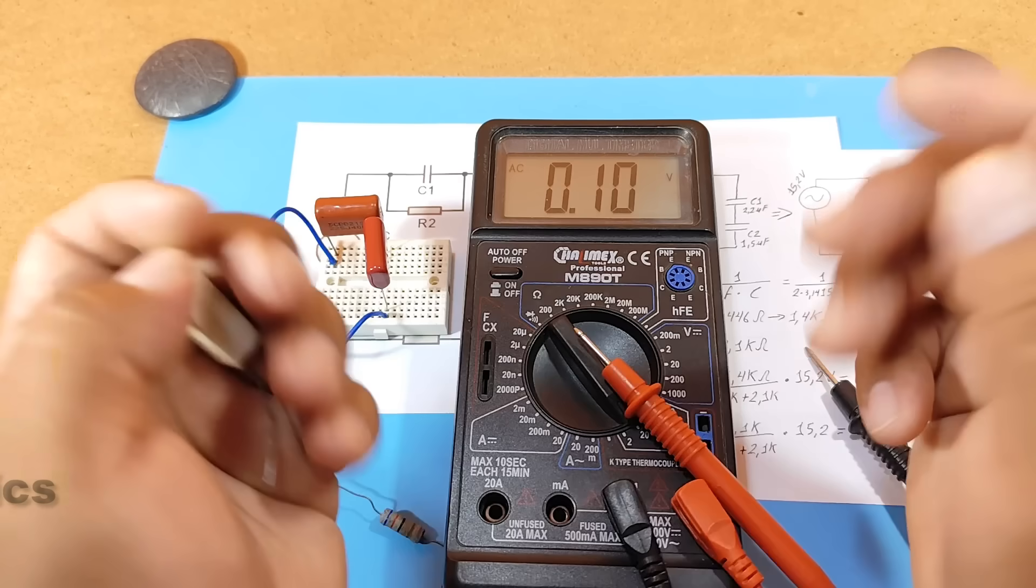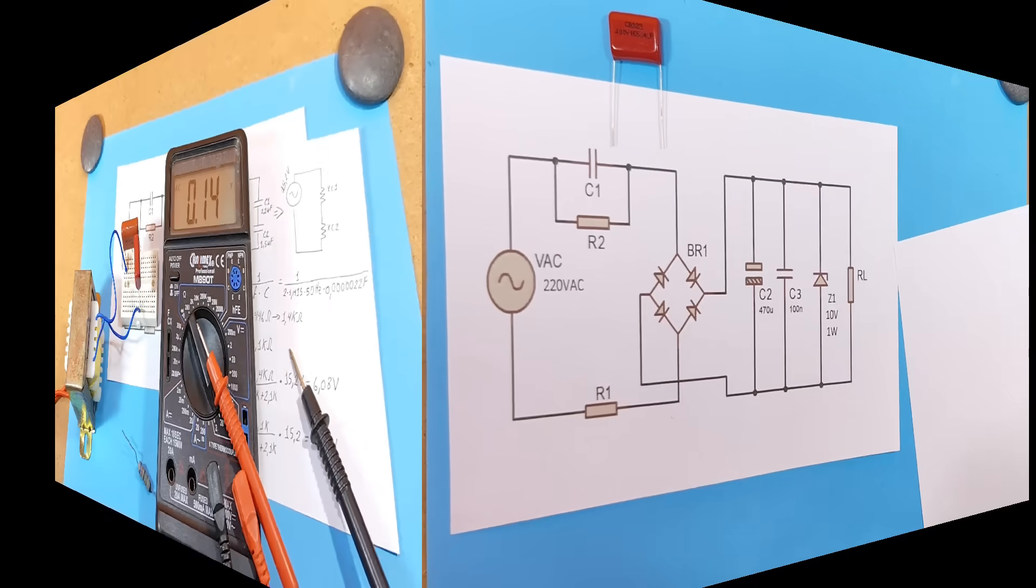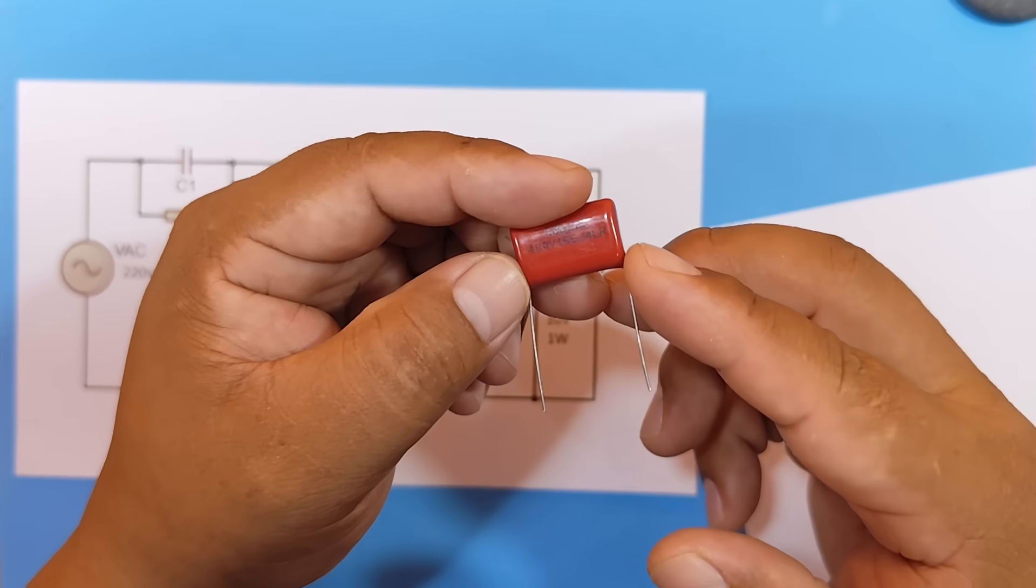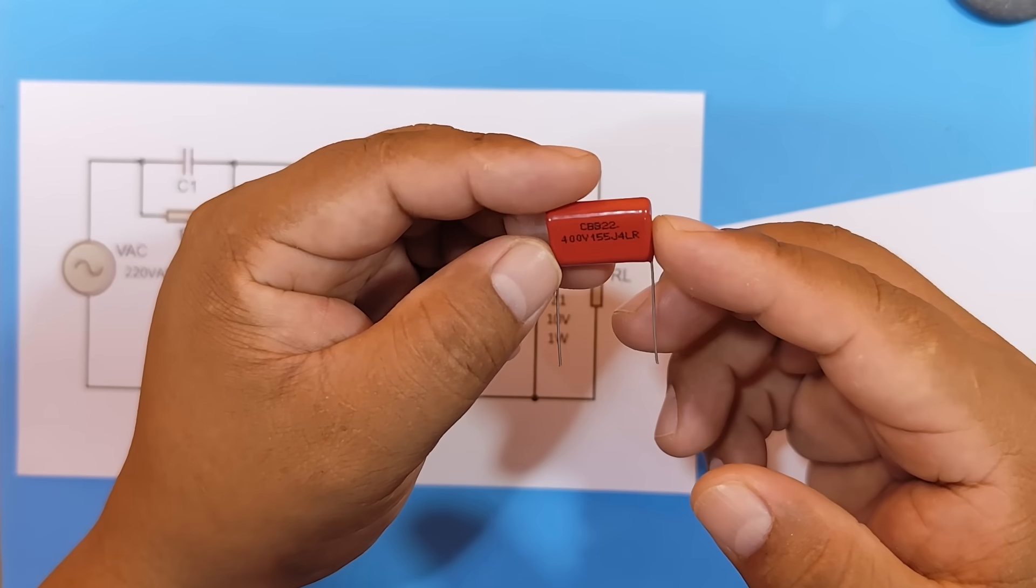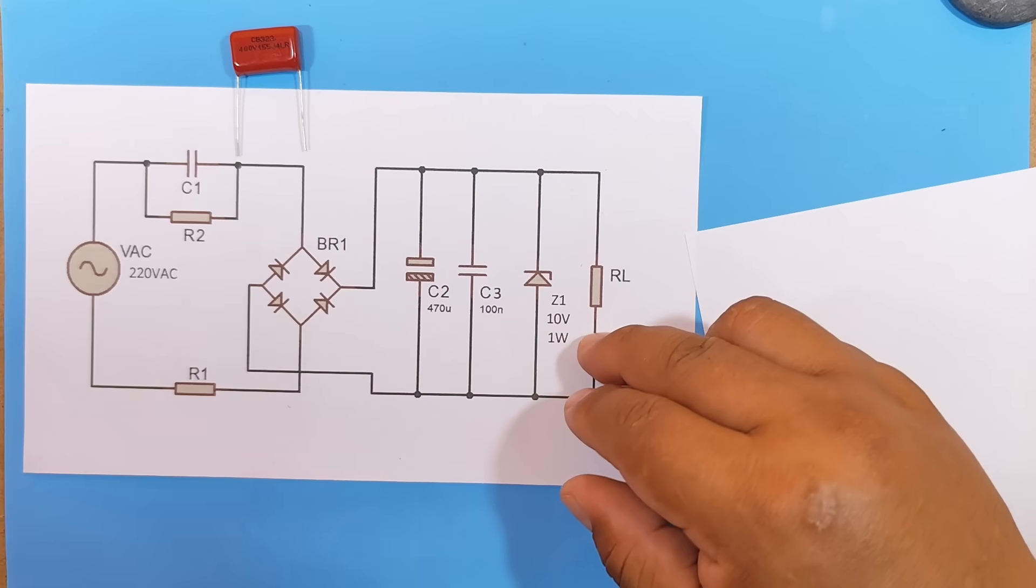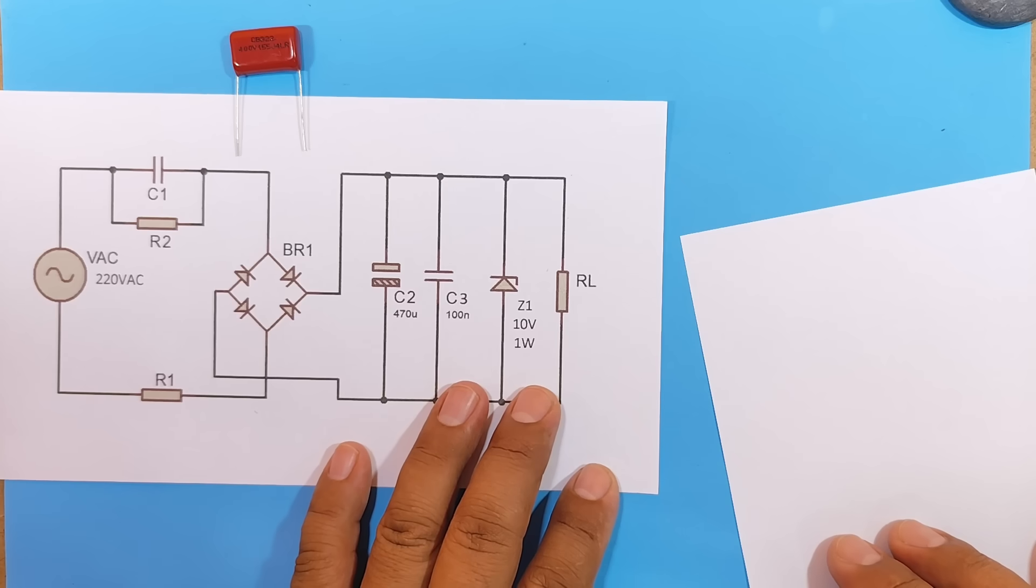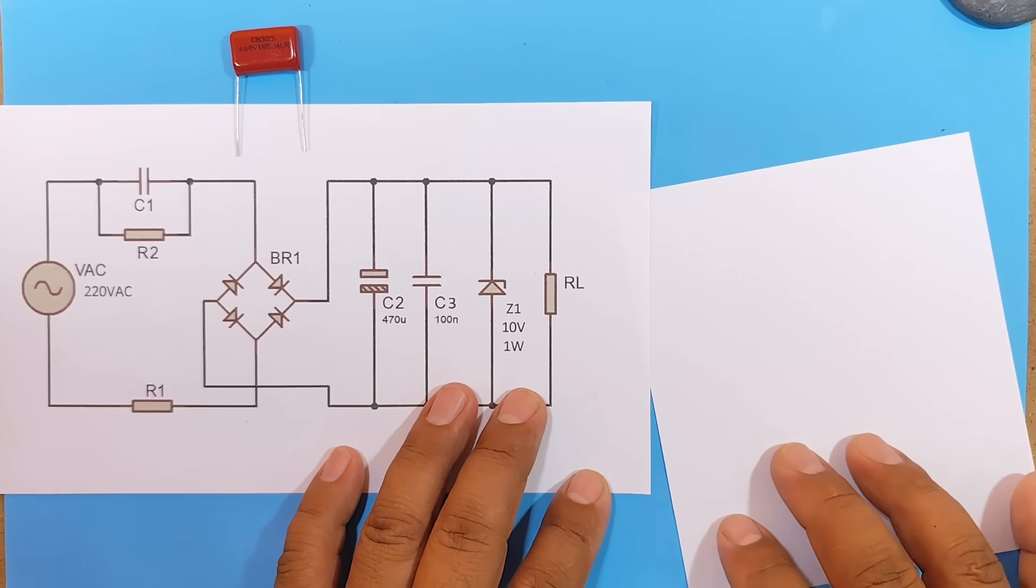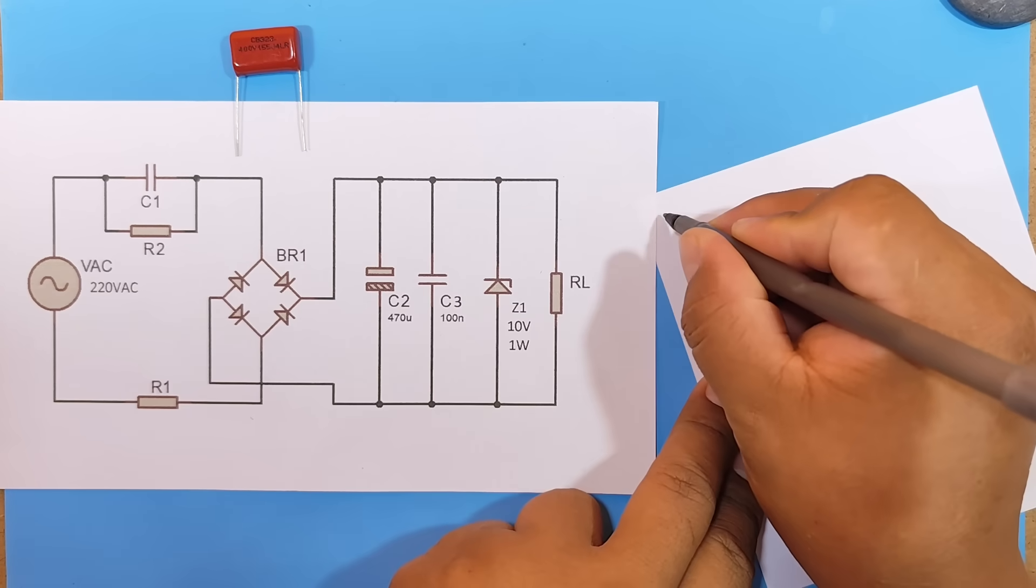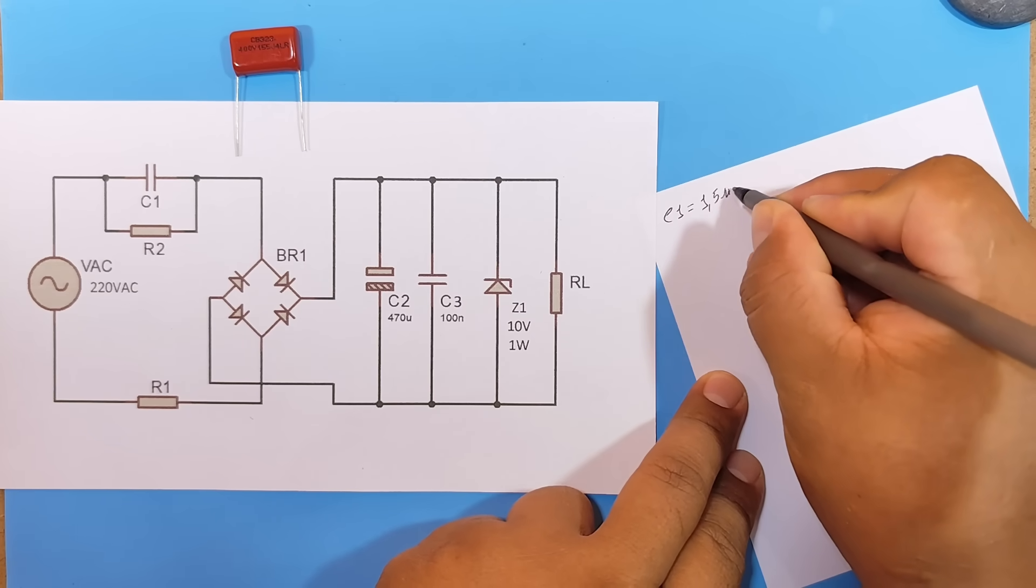Very good, now we move on to doing the calculation for our capacitive source. Now let's calculate how much current we can supply if we use a 1.5 microfarad capacitor. At the same time we are going to calculate the value of R1, and we are also going to calculate its power. To do this, the first thing we are going to do is write down the capacitance of our capacitor, which in this case is 1.5 microfarads.